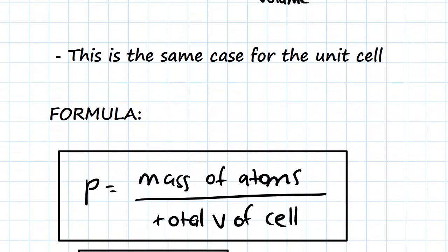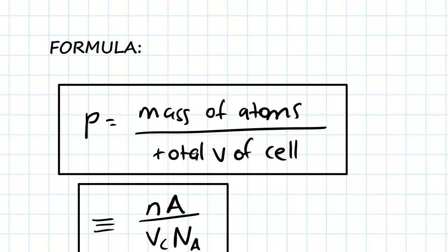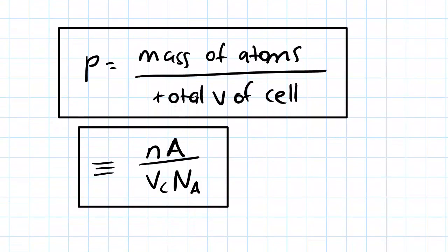So the formula, the general formula for the density of a unit cell then is going to be the mass of the atoms in the cell over the total volume of the cell. And this is equal to something even more specific, which we're going to use every time in the calculations, which are nA over Vc Na.